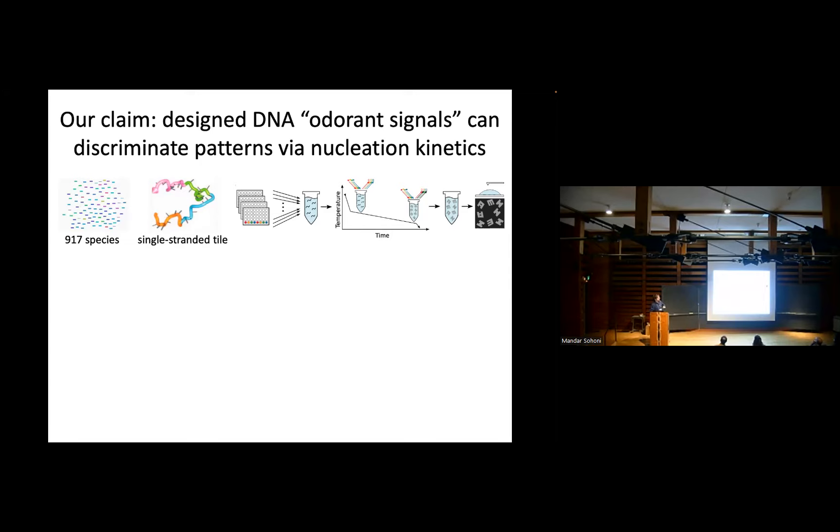We're going to have 917 species. They're going to be single-stranded molecules of DNA, about 42 nucleotides each. Very short. We'll take those in some blend, different concentrations of each molecule, put them into a test tube. And then over a long time, many hours, we'll cool that test tube down. As the test tube cools, the molecules will come together, self-assemble into shapes. In this case, the shapes will be H's, A's, and M's. And whether you get A's, H's, or M's is the classification of the odorant. Which type is it? H, type A, type M.